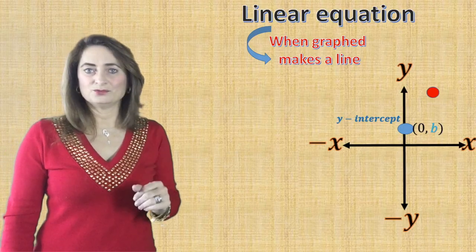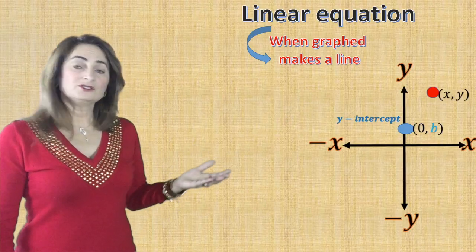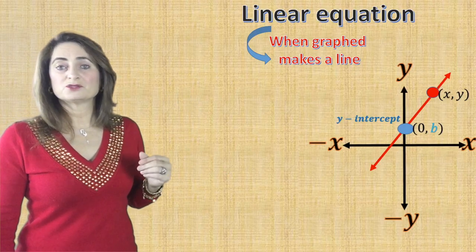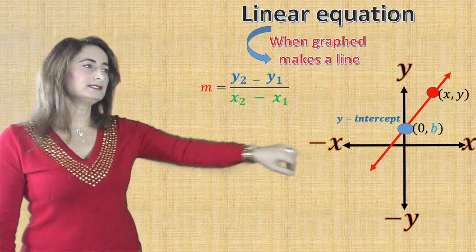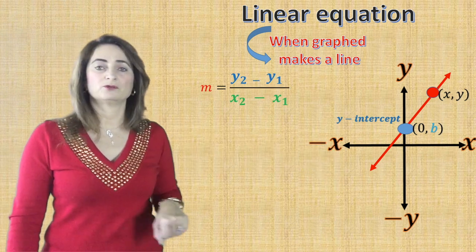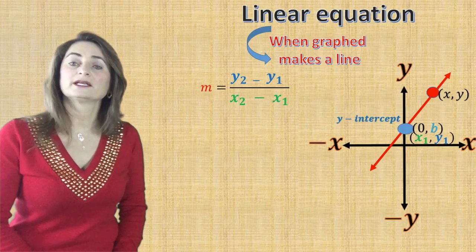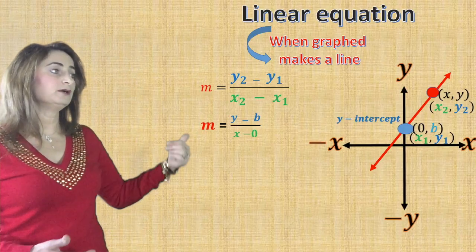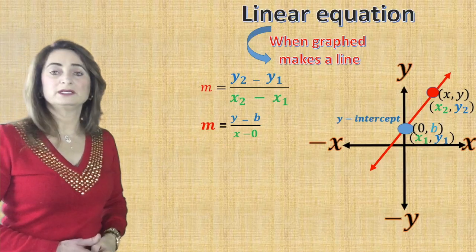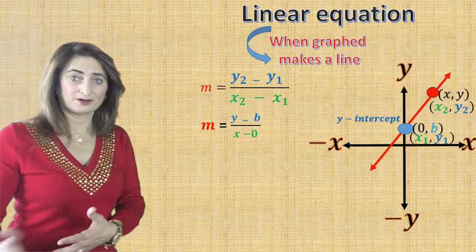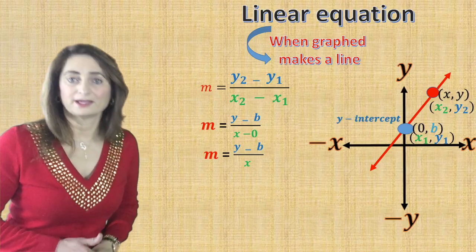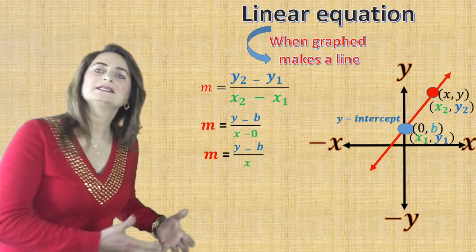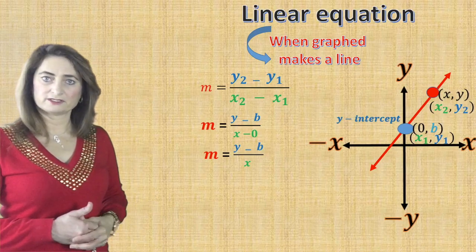Let's choose another coordinate on the graph, (x, y). To come up with the equation we use the slope formula: y₂ minus y₁ over x₂ minus x₁. Name the first coordinate (x₁, y₁) and the second (x₂, y₂). Substituting gives m equals y minus b divided by x minus zero, which simplifies to m equals y minus b divided by x.